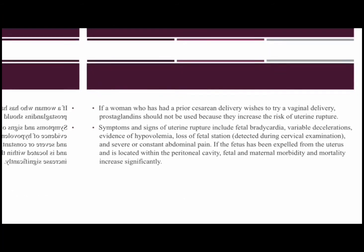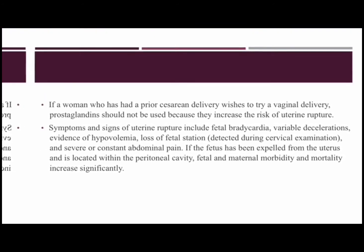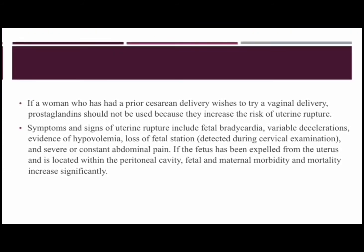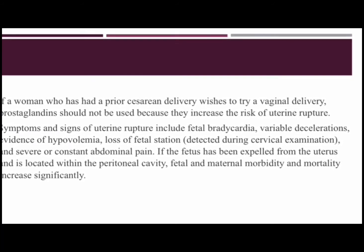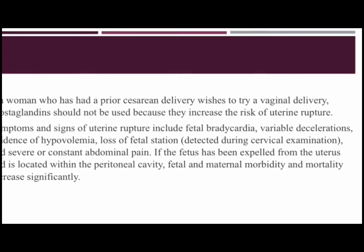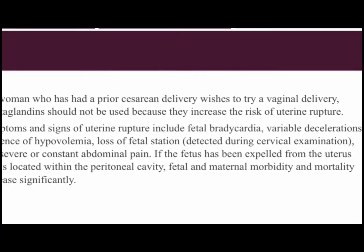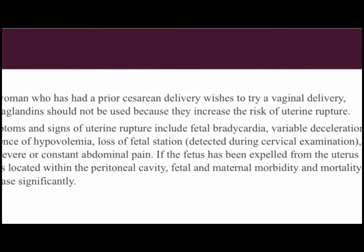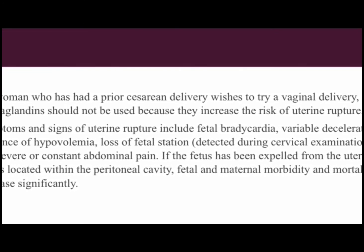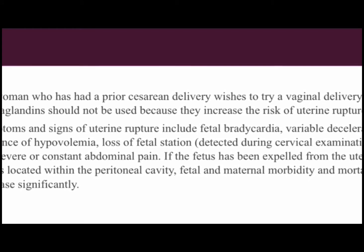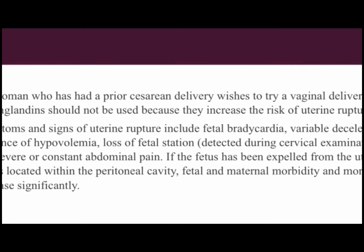If a woman who has had a prior caesarean delivery wishes to try a vaginal delivery, prostaglandins should not be used because they increase the risk of uterine rupture. The symptoms and signs of uterine rupture include fetal bradycardia, variable decelerations, evidence of hypovolemia, loss of fetal station, and severe or constant abdominal pain. If the fetus has been expelled from the uterus and is located within the peritoneal cavity, fetal and maternal morbidity and mortality increase significantly.